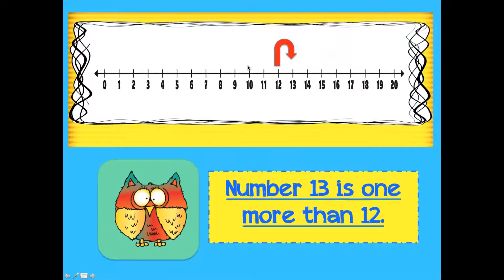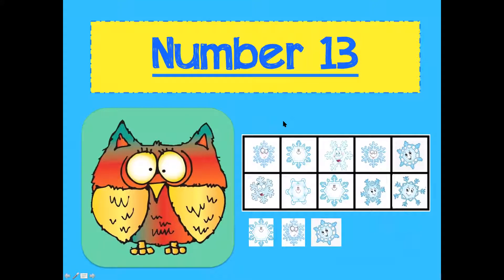Now let's look at our number line. Notice how number 13 is one more than 12. When the numbers go to the right, the numbers get larger. So here's 12 — 13 is one more. Good.